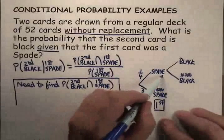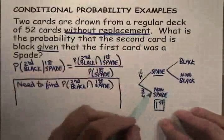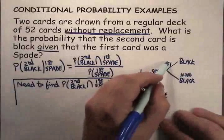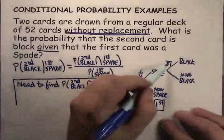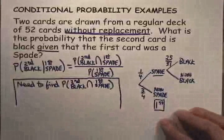We've already drawn a spade, and we're not replacing it. So now there are only 51 cards left in the deck, and a spade is a black card. So you've only got 25 black cards left after the first draw.